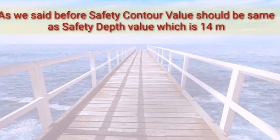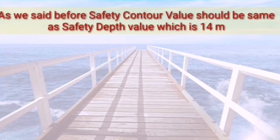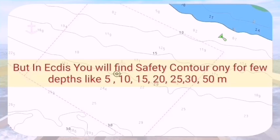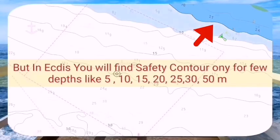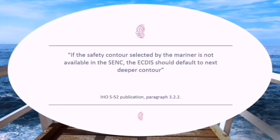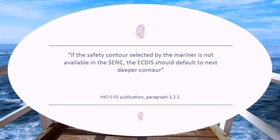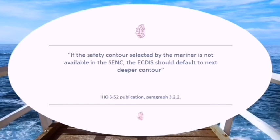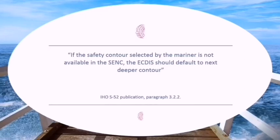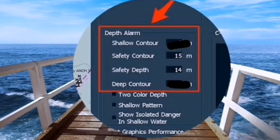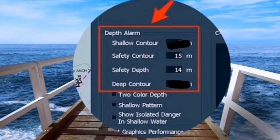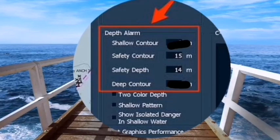As we said before, our safety contour value should be the same as the safety depth value, which is 14 meters. But in ECDIS you will find only a few depth contours to avoid clutter — 5 meters, 10 meters, 15 meters, and so on. As per IHO S-52 publication paragraph 3.2.2, if the safety contour selected by the mariner is not available in the ENC, the ECDIS should default to the next deeper contour. So if we put 14 meters as the safety contour, it will automatically choose the nearest deeper one, which is 15 meters.